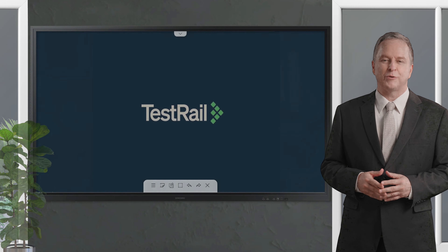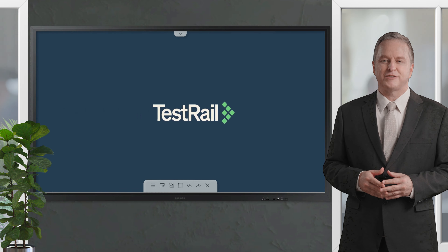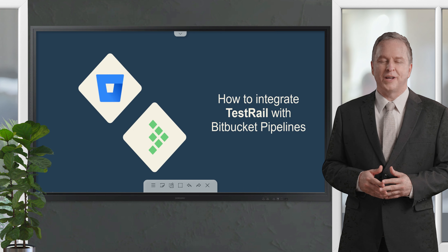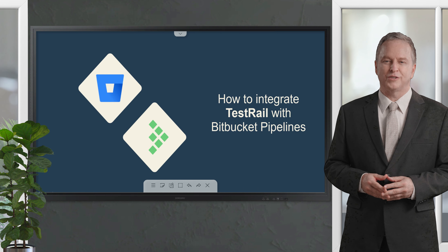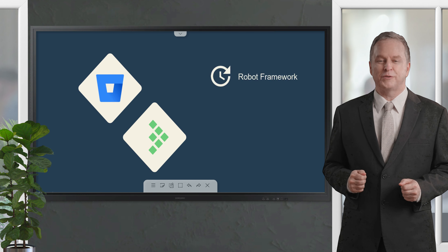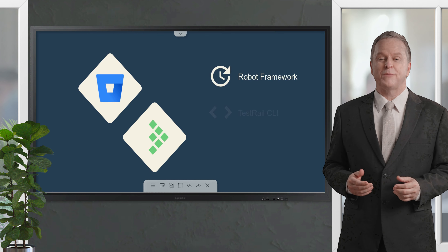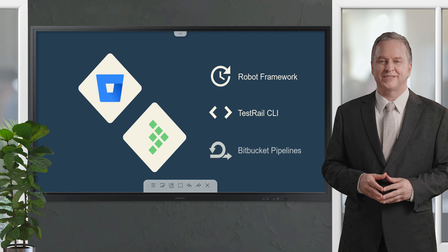In this new Nucida video, you'll learn how to send your automated test results directly from Bitbucket Pipelines to TestRail. In this example, I'm going to use Robot Framework to run the tests and the TestRail CLI to upload the results to TestRail, all through Bitbucket. In the end, you'll see how easy it is to manage all your testing efforts — manual and automated — on a single platform.